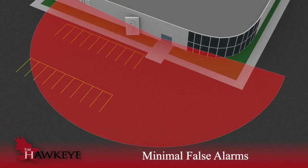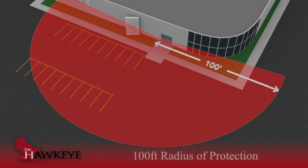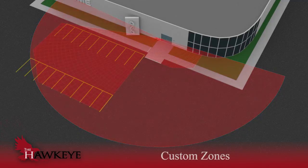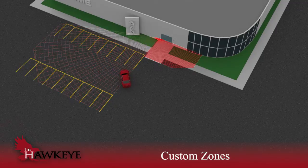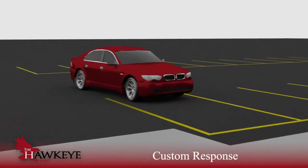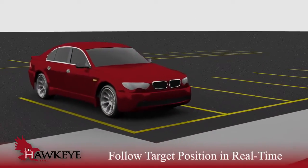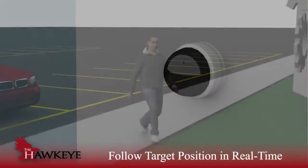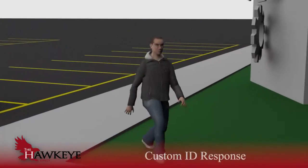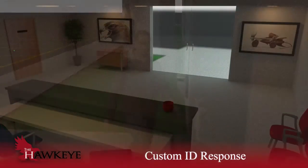In an outdoor environment, the laser scanner protects areas as wide as a 100-foot radius, such as a perimeter or a parking lot. The Hawkeye software allows you to draw custom zones around areas of interest. As a target breaks the boundaries of the zone, choose your response — like follow a target's position in real time with a standard PTZ camera, and identify friend or foe.